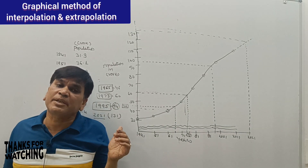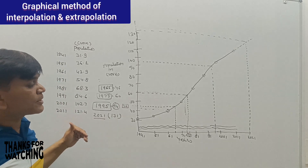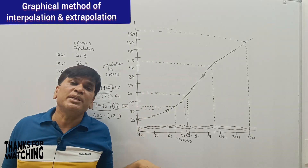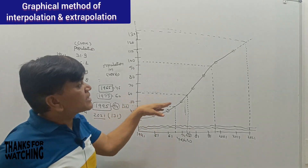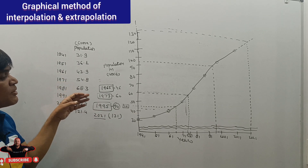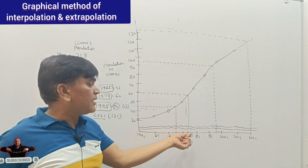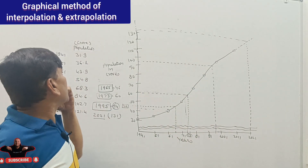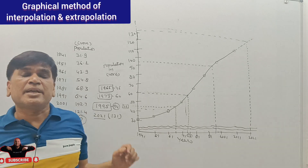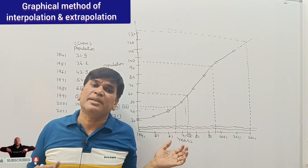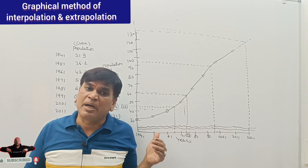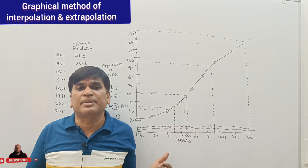This is the graphical method for interpolation and extrapolation. First, we plot the population data on graph paper to get the original curve. To interpolate, we read values between known data points — as we did for 1965, 1973, and 1995. To extrapolate, we extend the trend beyond the series. With the graphical method, we can calculate both interpolation and extrapolation. I hope this video helped you understand how to interpolate and extrapolate data using the graphical method. Thank you.